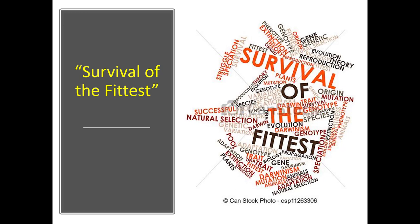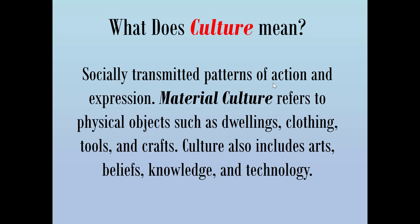A couple of important terms from your book. First: culture. Culture is socially transmitted patterns of action and expression. Material culture refers to physical objects such as dwellings, clothing, tools, and crafts. Culture also includes arts, beliefs, knowledge, and technology — it's really shared patterns of action that we all do because that's what we learned. We socialize that way, wear similar clothes, listen to similar music. Go to a different country and they do things a little differently — that's their culture. It doesn't mean one is better or worse; it just means it's different.